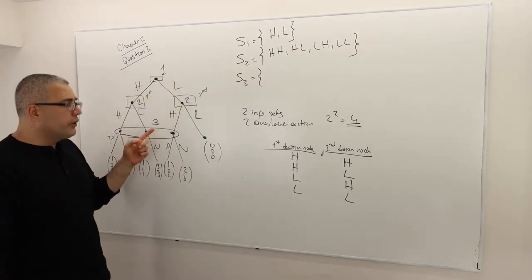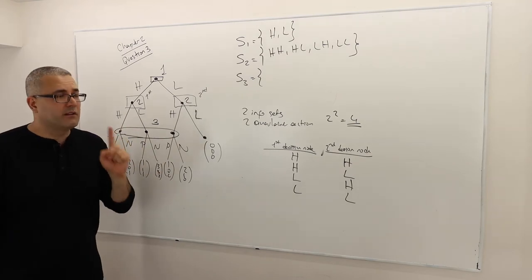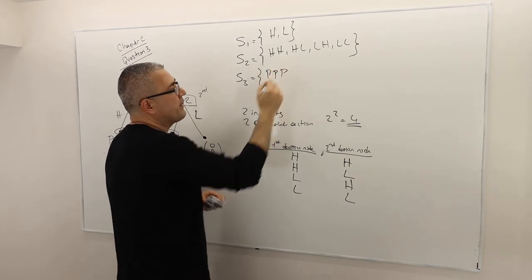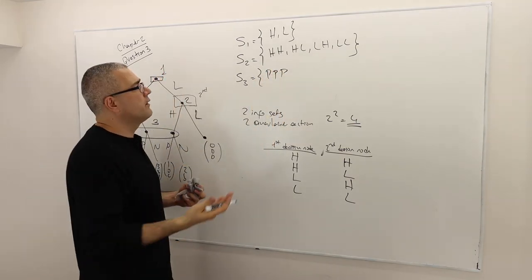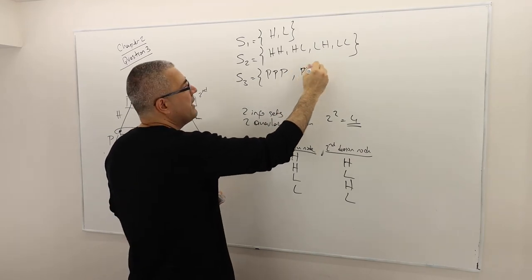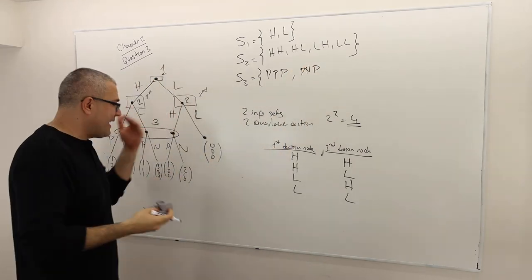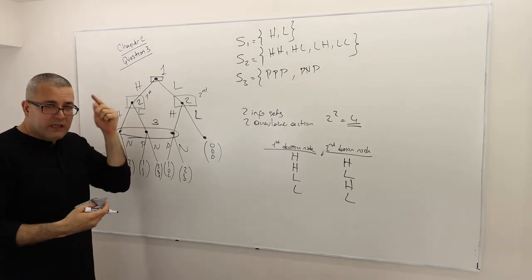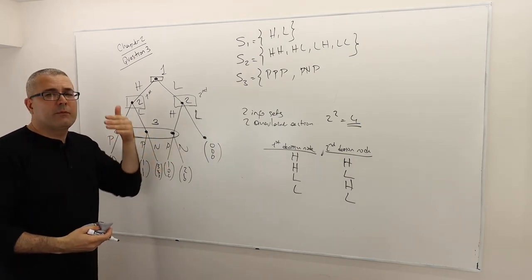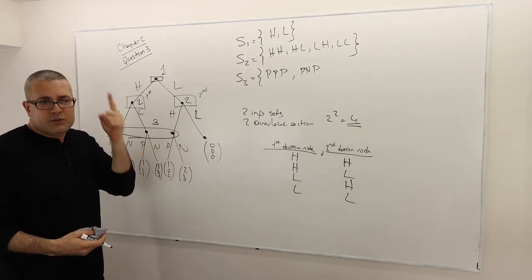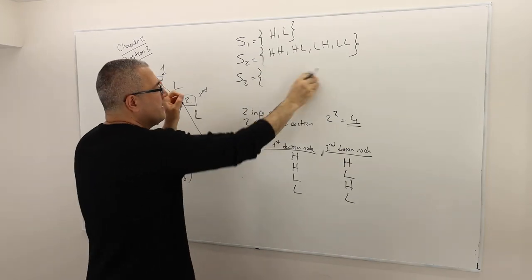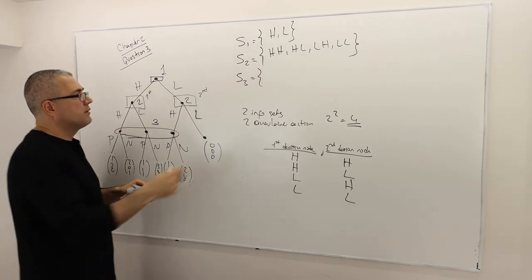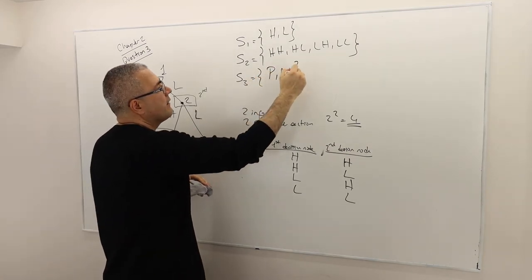Player three has three decision nodes, but they are all in the same information set, so they don't count as three — they count as one. Therefore player three has one information set with two available actions, giving two to the power one strategies: P and N.